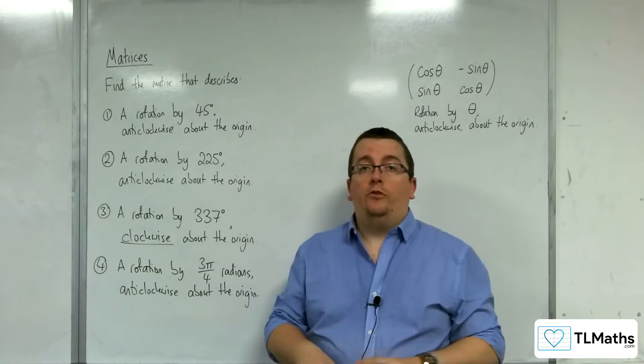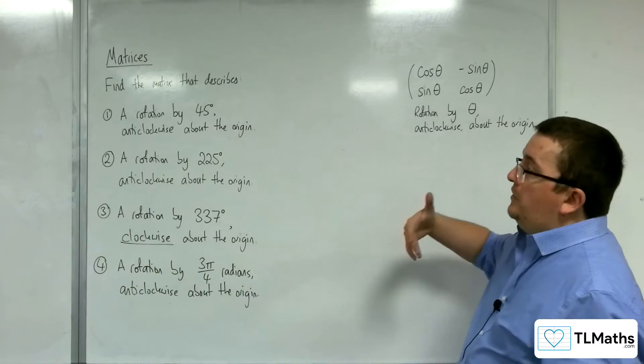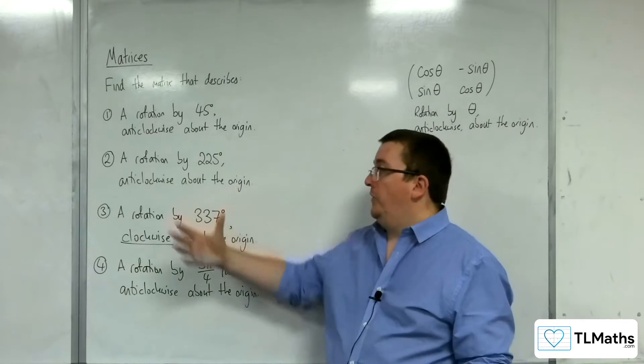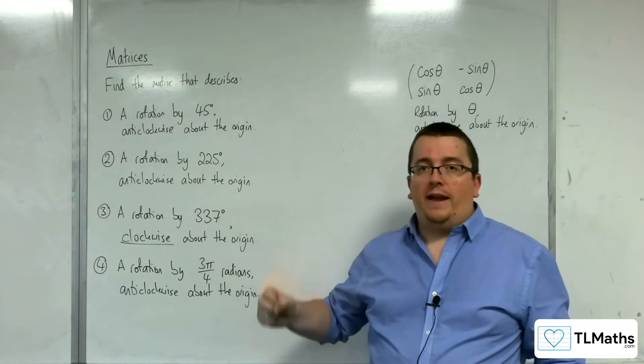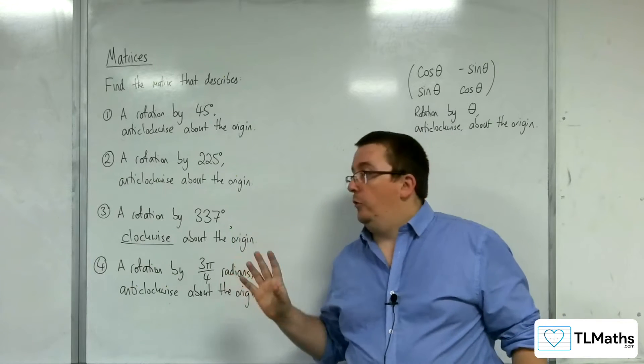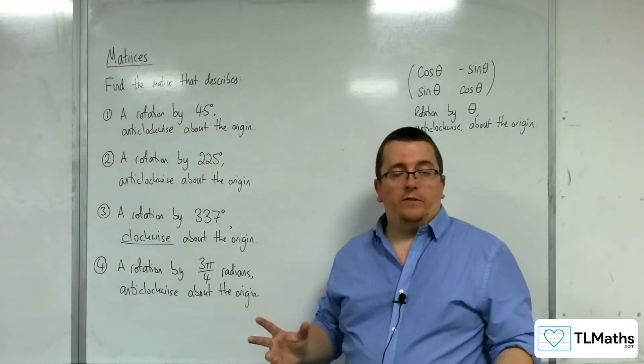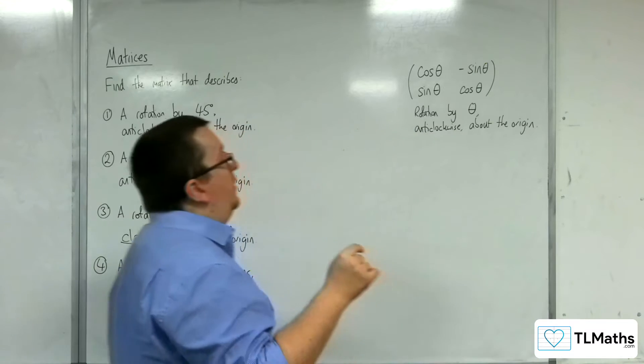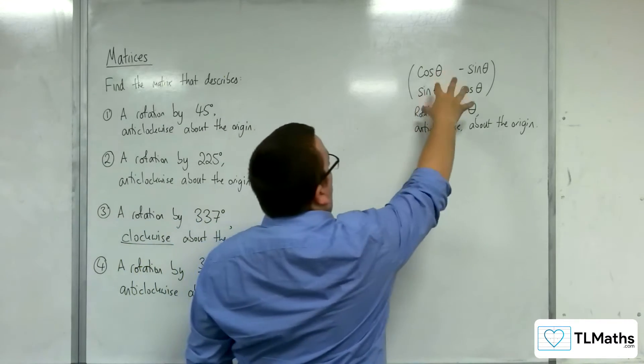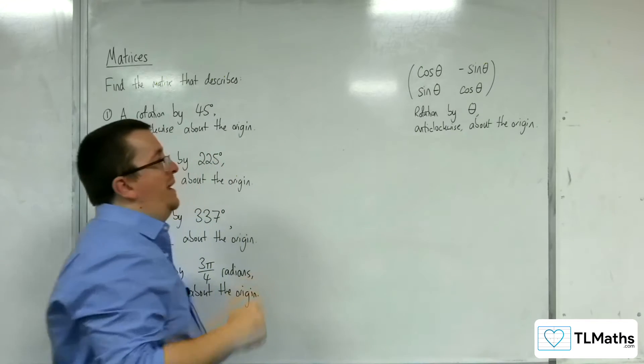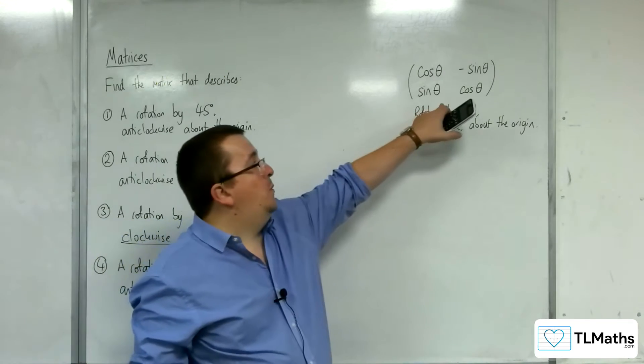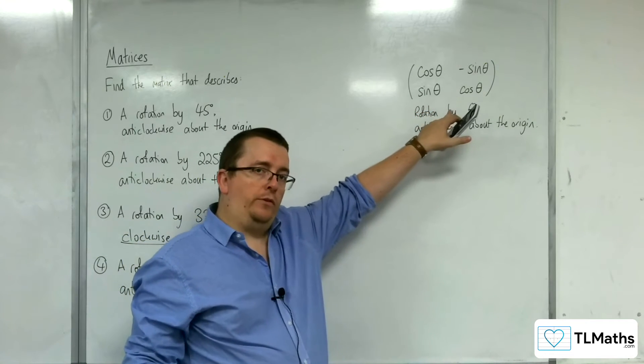So in this video, I want to go through some examples of being told to find a matrix, a rotation matrix, of a certain angle, anticlockwise or in this case clockwise, about the origin. And we're going to use our general form matrix that we have here. Really, you should be walking into the exam knowing that matrix.